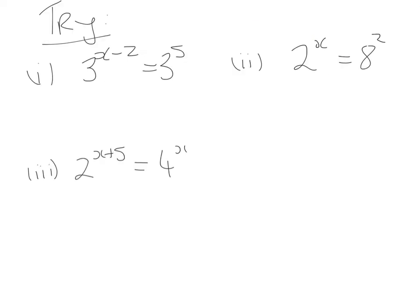For the first practice question, the base numbers are already the same, so we just equate the indices: x minus 2 equals 5. Adding 2 to both sides, x equals 7. So substituting 7 back in: 7 minus 2 is 5, and 3 to the power of 5 equals 3 to the power of 5.